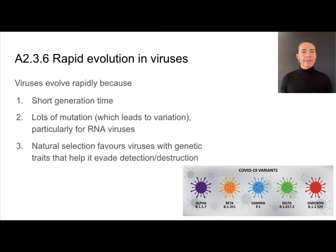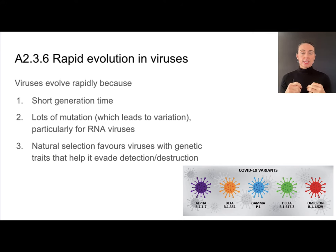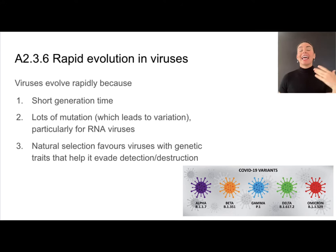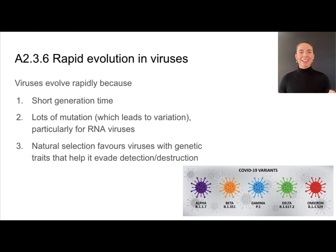Especially RNA viruses — with no complementary base pairing and no proofreading — experience lots of mutations every time the RNA is copied. Mutations are the source of variation, and natural selection favors those viruses with genetic traits that help them evade detection. Viruses that carry genes making it easy for immune systems to detect them are less successful, so natural selection is effectively favoring viruses that are better at evading our immune systems.